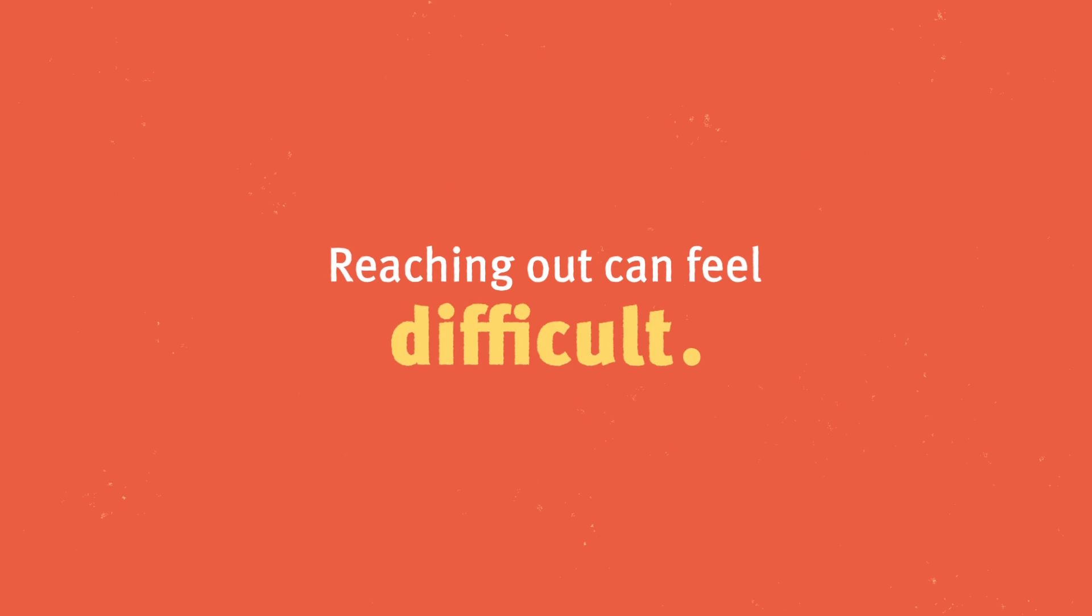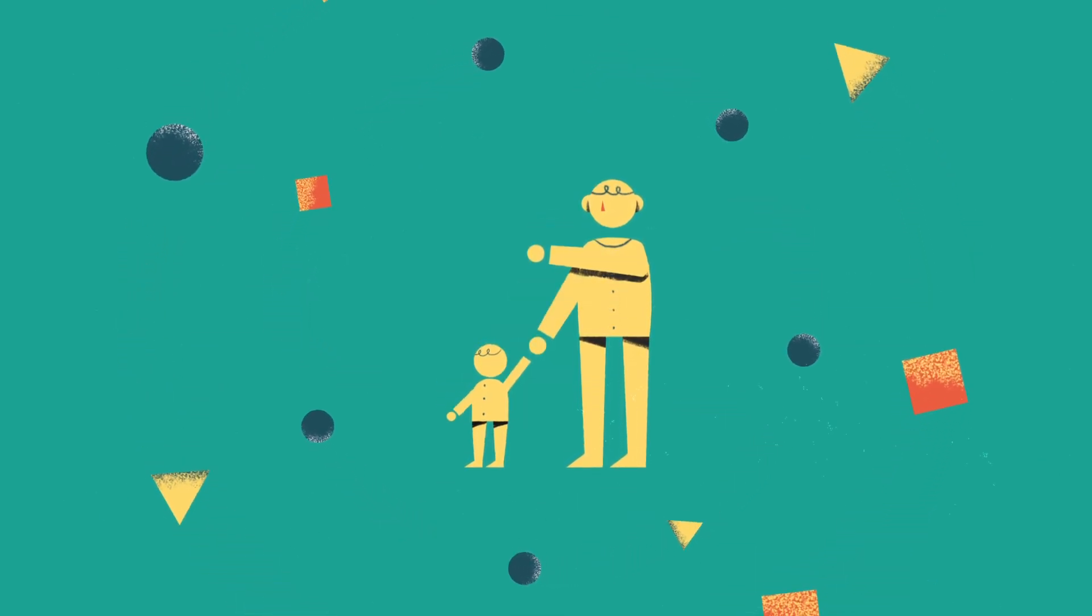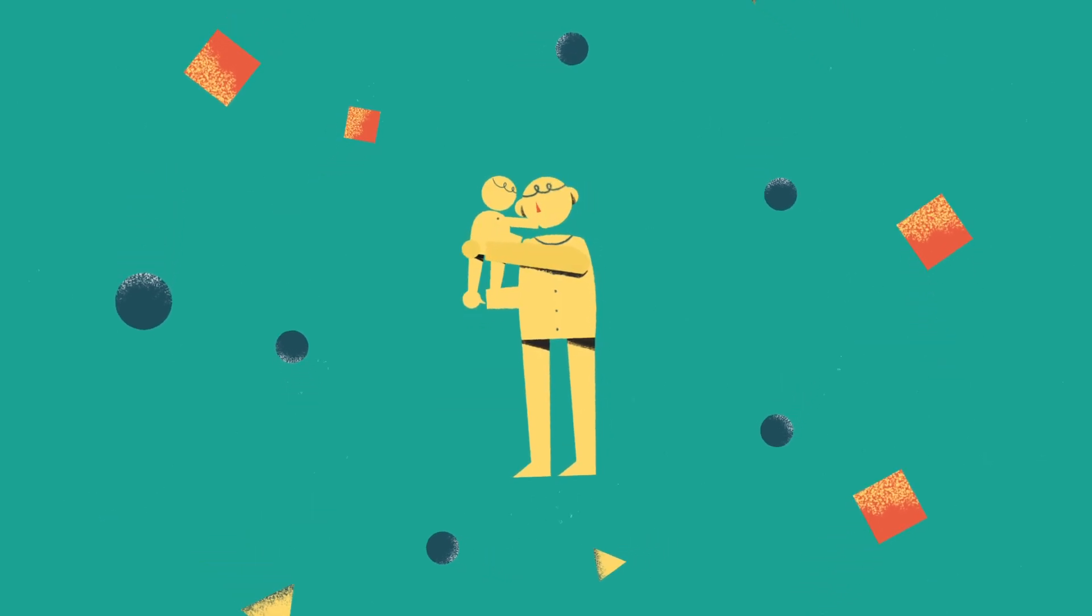Reaching out to get support can be difficult. But things that might seem very small, like sitting and breathing deeply, playing I Spy with your child, or even sharing a walk or a snuggle, can make a difference.